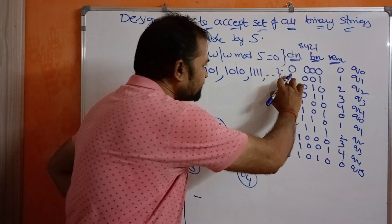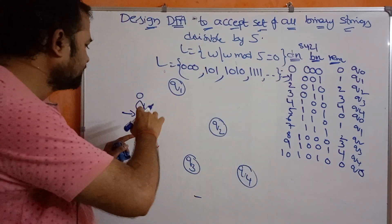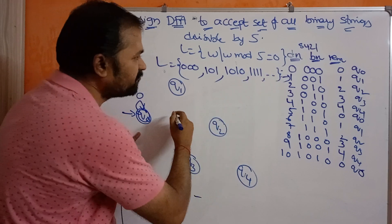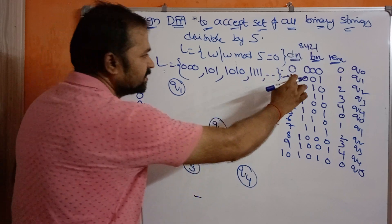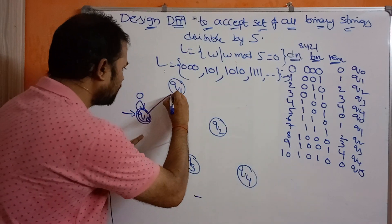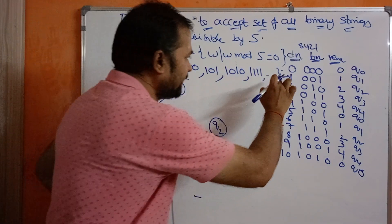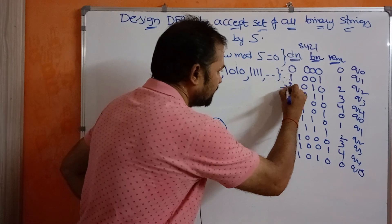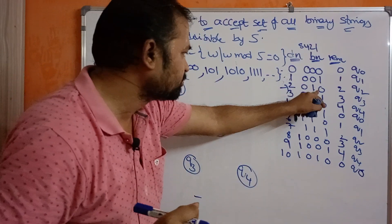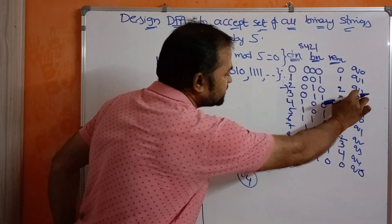Now let us focus on 1, represented as 001. The leading zeros keep us at q0. Then q0 on 1 goes to q1. So the transition q0 on 1 means q1. Next, q0 on 0 stays at q0, and q1 on 0 goes to q2.